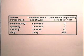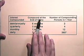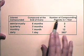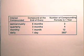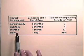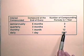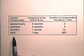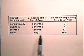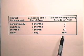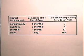Let's look at the interest rate per compounding period and the number of compounding periods. If interest is compounded semi-annually, interest is compounded at the end of every six months and the number of compounding periods in one year is two. If compounded quarterly, interest is compounded at the end of every three months and the number of compounding periods in one year is four. If compounded monthly, it is compounded at the end of every one month and the number of compounding periods in one year is 12. If compounded daily, interest is compounded at the end of every day and there are 365 compounding periods in one year, but a leap year has 366 compounding periods.